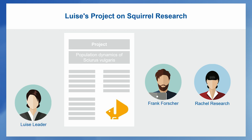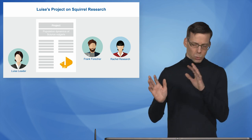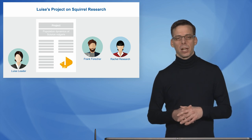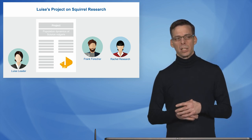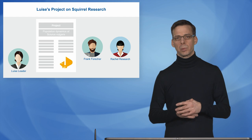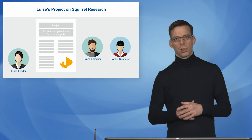Within this project, Louise Lieder built a theoretical model to look at the population dynamics of squirrels, and she compared her theoretical ideas with concrete data gatherings from Frank Forscher in Germany and Rachel Research in Great Britain. When she looks back at this project, she remembers that it was successful, but there were quite some data management issues. The main point was that she didn't prescribe to the other researchers how to do their data management and data gathering, which caused some problems.